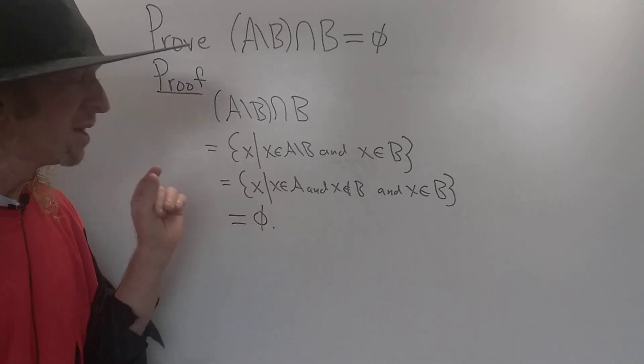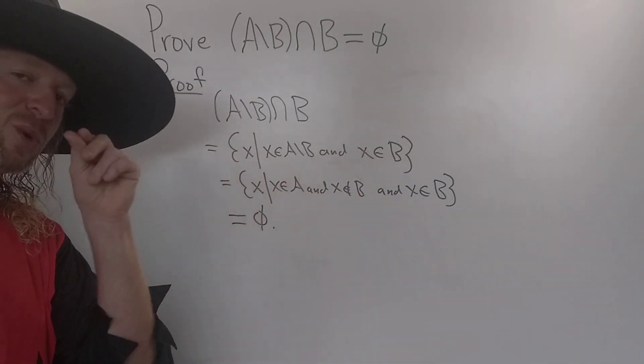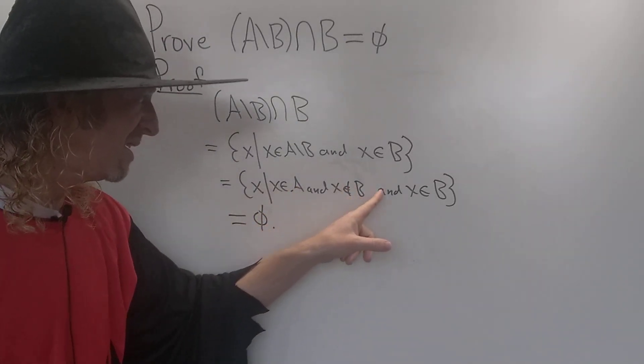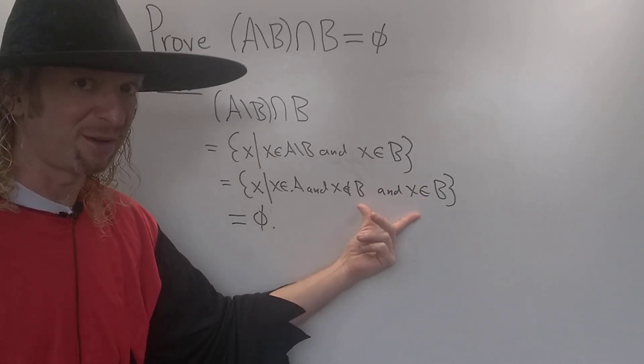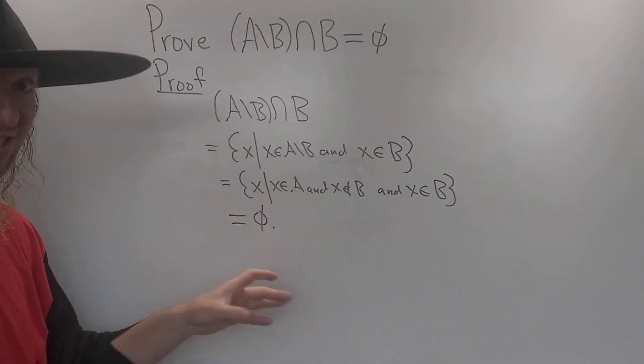Because this is what it means for an element to be in this set. So we have to have an element that's in A - who cares about that? But we have to have an element that's not in B and also in B. There are no such elements. They don't exist. So the set must have no elements. So it must be the empty set.